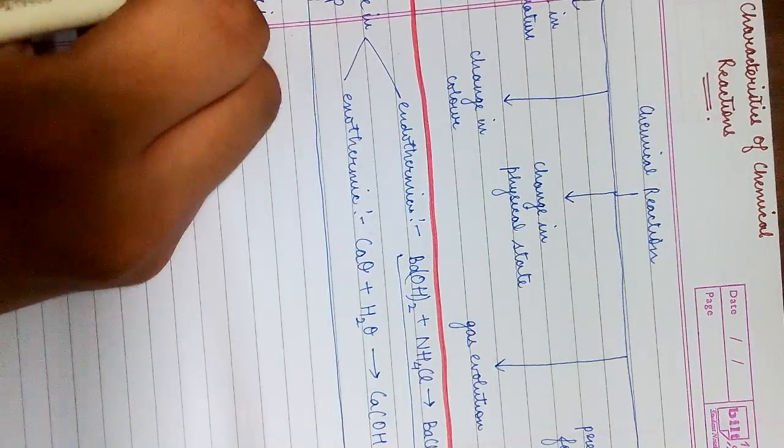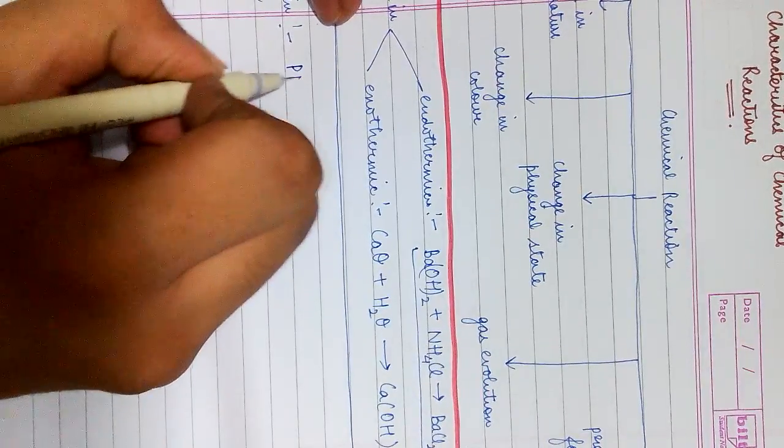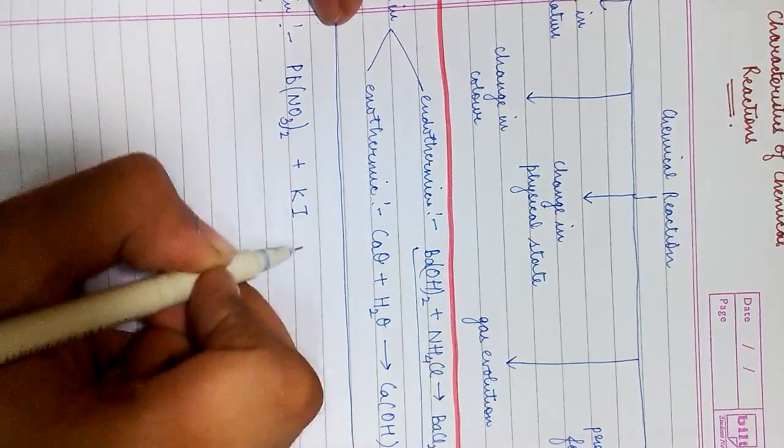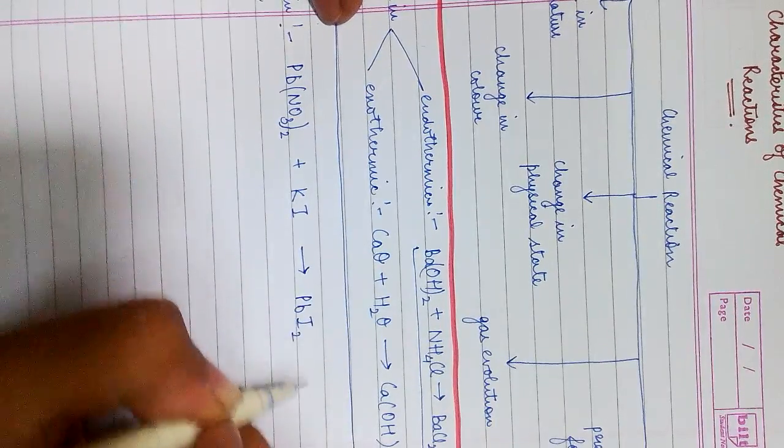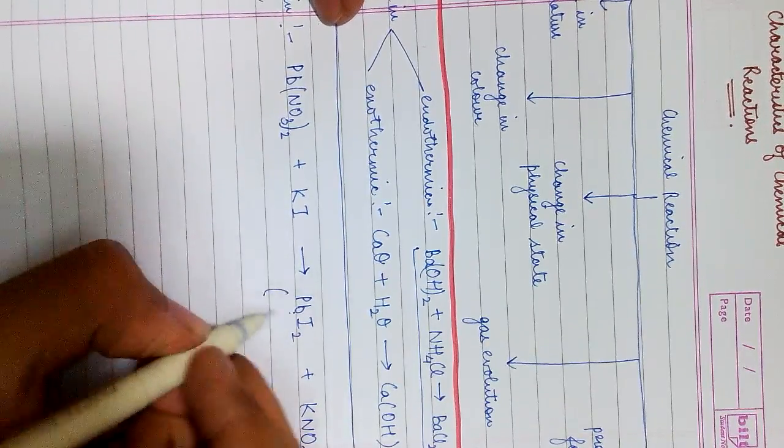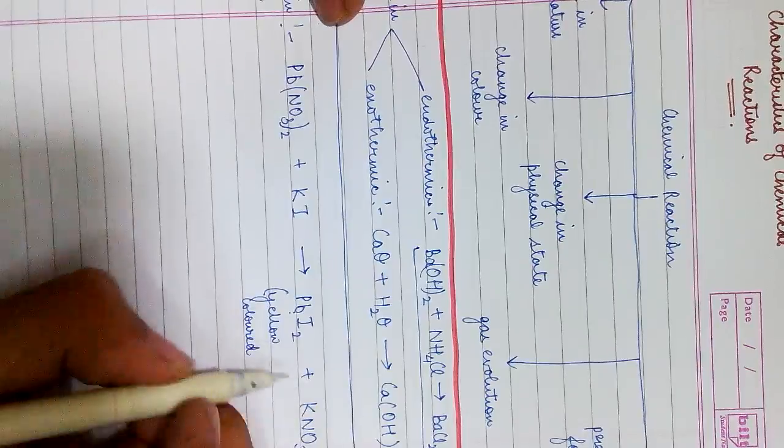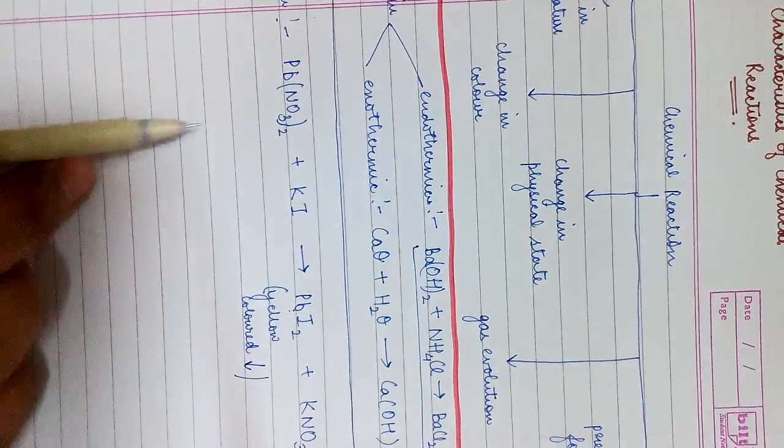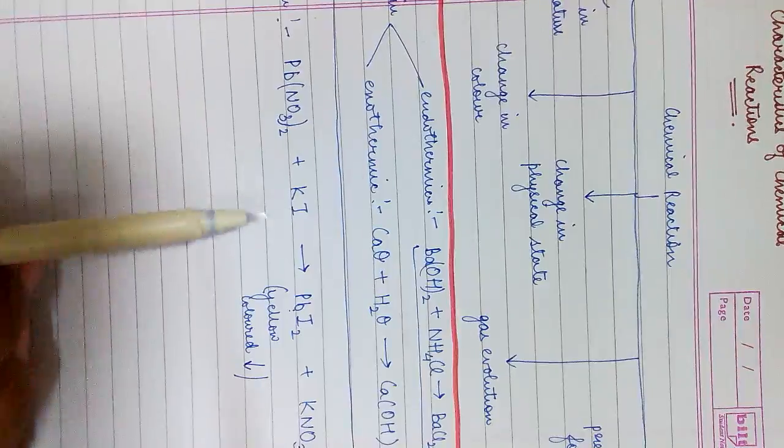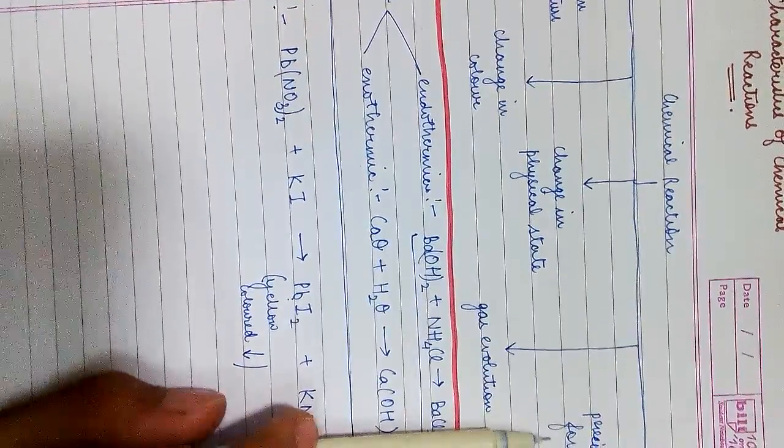For this we could have an example of lead nitrate reacting with potassium iodide to form lead iodide and potassium nitrate. So lead iodide is a yellow colored substance and it is a precipitate. So we could say that the reaction of lead nitrate and potassium iodide is showing two characteristics: change in color as well as the formation of a precipitate. So this was the example of change in color.